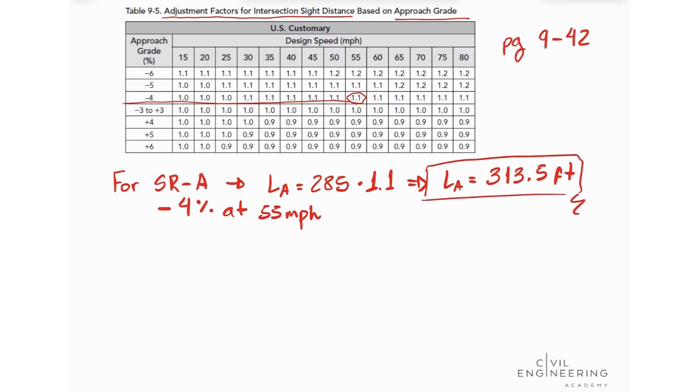Now we're going to do the same thing for State Route B and we got our length for State Route B is 405 and from the table we're going to look at State Route B has plus 5% grade at 70 miles per hour. So let's look at that value here, 5 and 70, 0.9, so we need to multiply our 405 by 0.9 and we're going to get that our length for B is equal 364.5 feet.